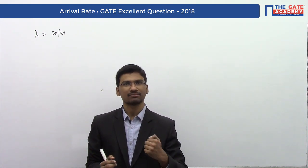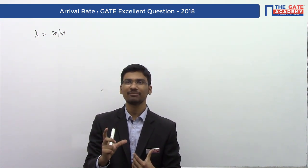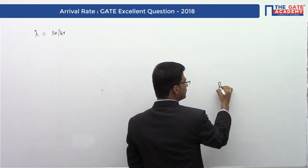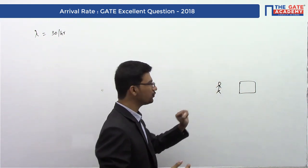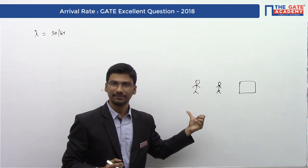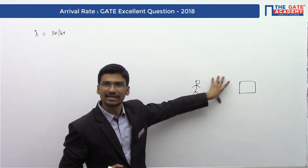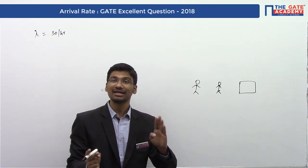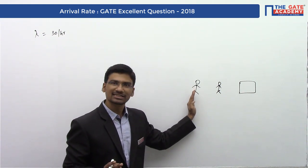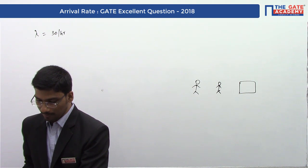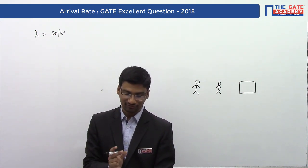They are asking us to find the probability that the time between successive customer arrivals is between one minute and three minutes. For example, a customer enters the queue, and then another customer enters after some time. We need to find the probability that this inter-arrival time — whether it's one, two, or three minutes — falls between one and three minutes.